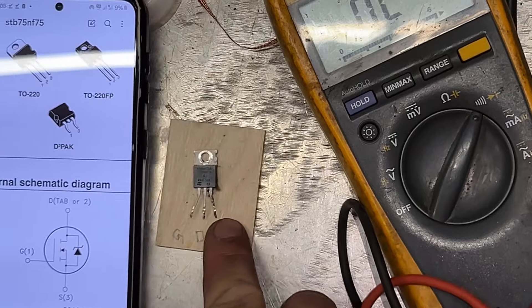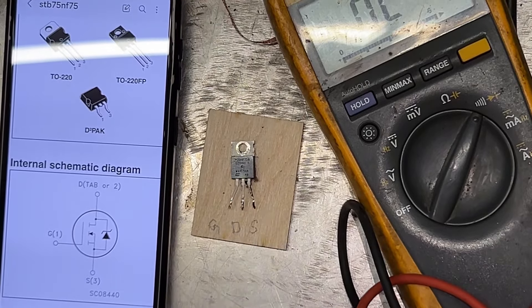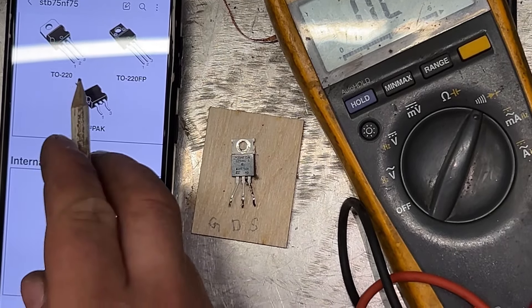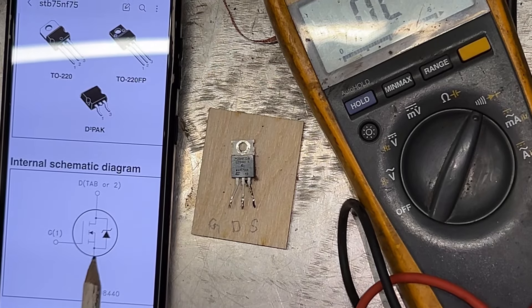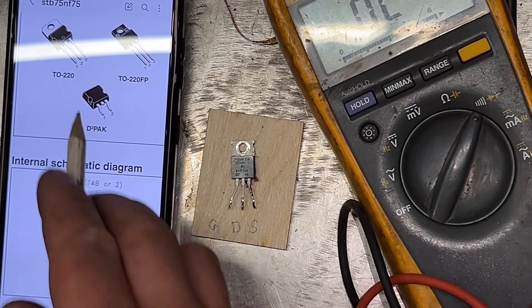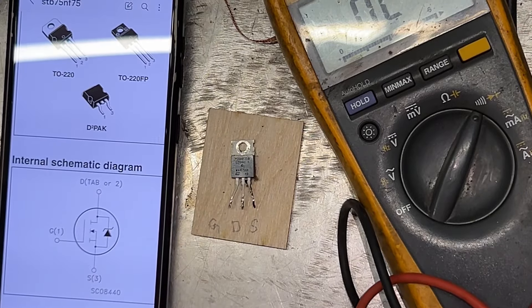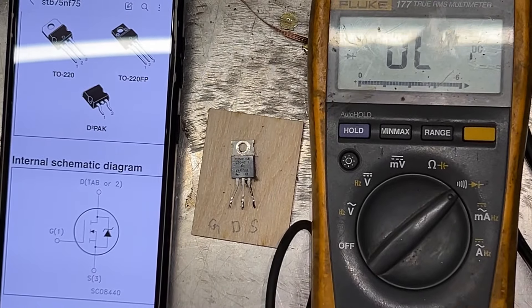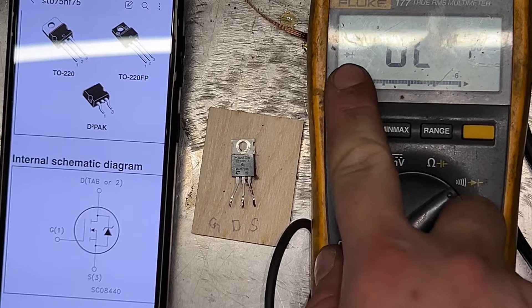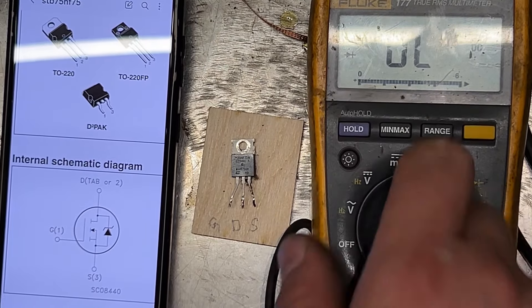Can you see? I'll try to get them. One, gate. Two, drain. Three, source. You need a multimeter that can test diodes. Diode function.